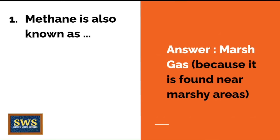Methane is also known as — the correct answer is marsh gas. The reason is that it is found near marshy areas. You could also be asked the other way round: which gas is found near marshy areas and gives its name as marsh gas? The answer would be methane.